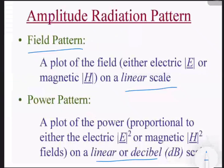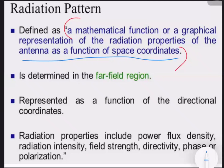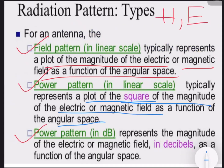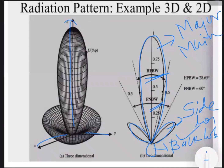In this session you have learned about the radiation pattern of an antenna. The radiation pattern is the graphical representation of the radiation properties of an antenna in space coordinates. The radiation pattern can be of three types: field pattern, power pattern in linear scale, and power pattern in dB. A radiation pattern of the antenna always has three lobes: the major lobe, the minor lobe, and the side lobes — also called main lobe, back lobe, and null points.